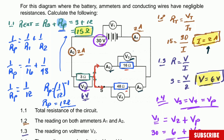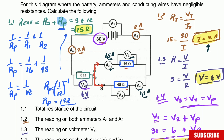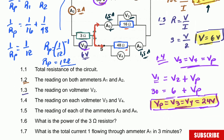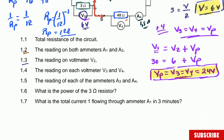So on the circuit diagram we have 1.5 amperes through the 16 ohm branch and 0.5 amperes through the 48 ohm branch. That completes question 1.5.